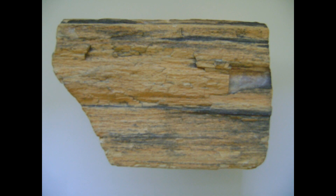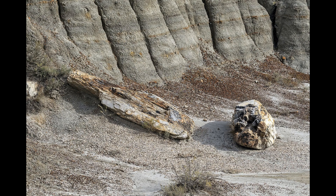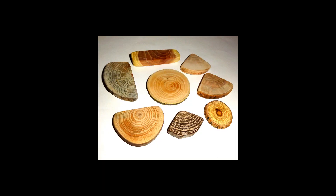The petrifaction process occurs underground, when wood becomes buried in water or volcanic ash. The presence of water reduces the availability of oxygen, which inhibits aerobic decomposition by bacteria and fungi. Mineral-laden water flowing through the sediments may lead to permineralization, which occurs when minerals precipitate out of solution, filling the interiors of cells and other empty spaces.